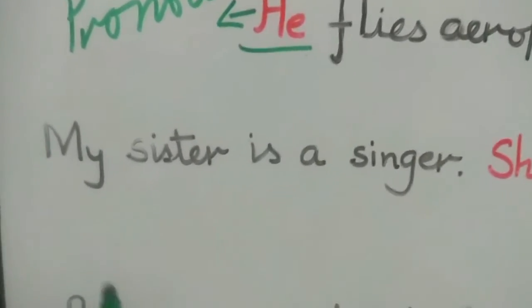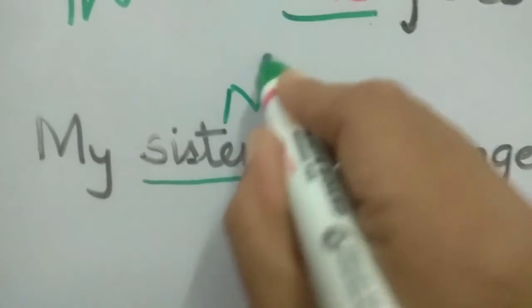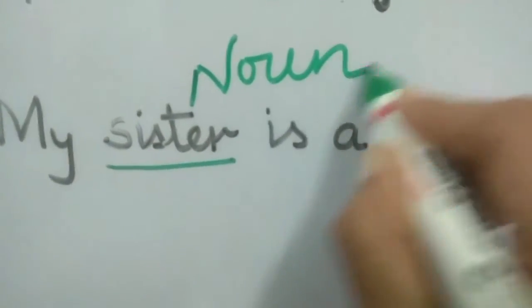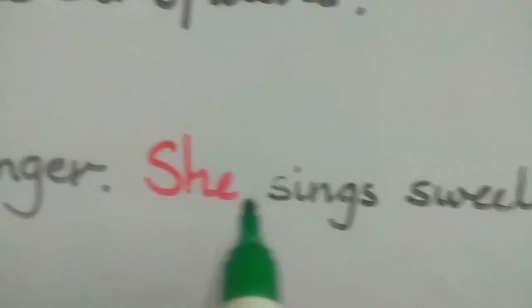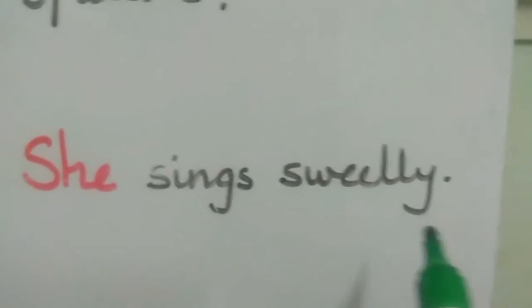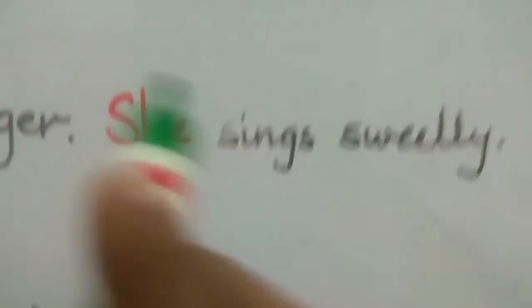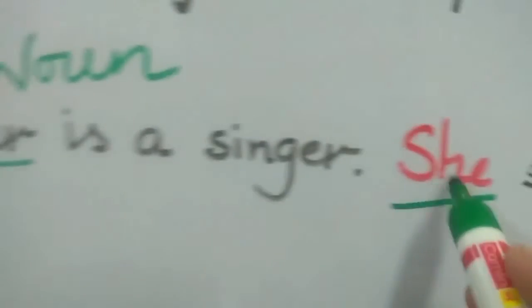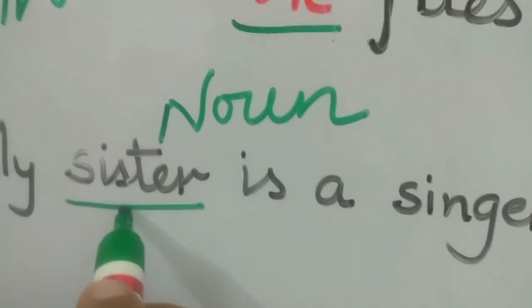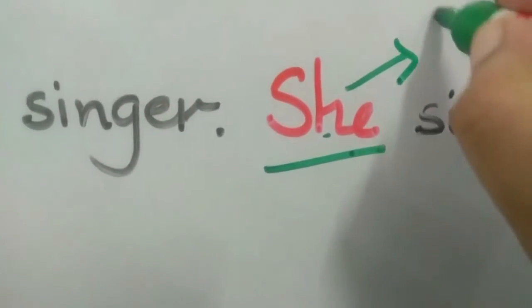One more example: 'My sister is a singer.' Sister is a noun. When again I am talking about the same girl, my sister, I write 'she sings sweetly.' We do not write or speak nouns repeatedly, so we write 'she sings sweetly.' The word 'she', written in the place of 'sister', is a pronoun.